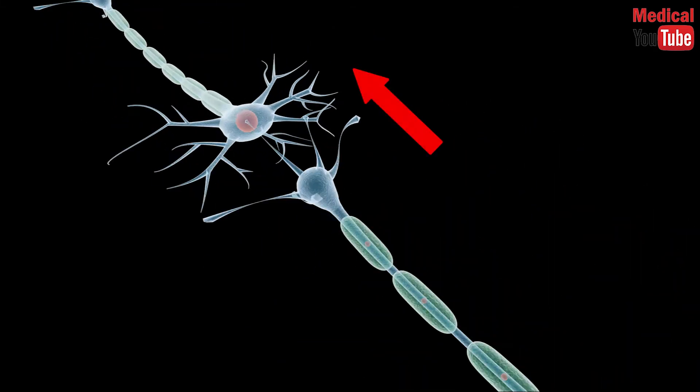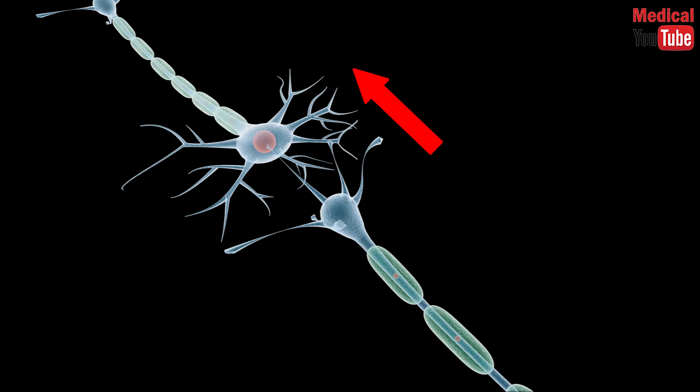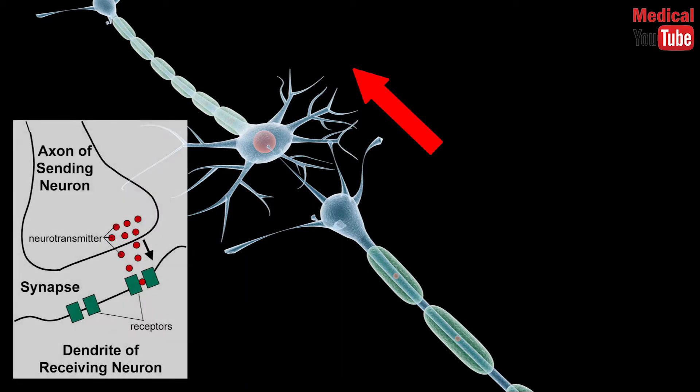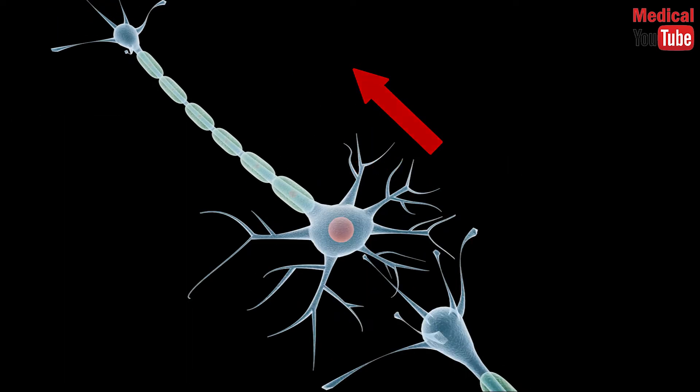Signals are sent from the axon of one neuron to a dendrite of another through chemicals known as neurotransmitters, which attach to specific receptors in the dendrites.